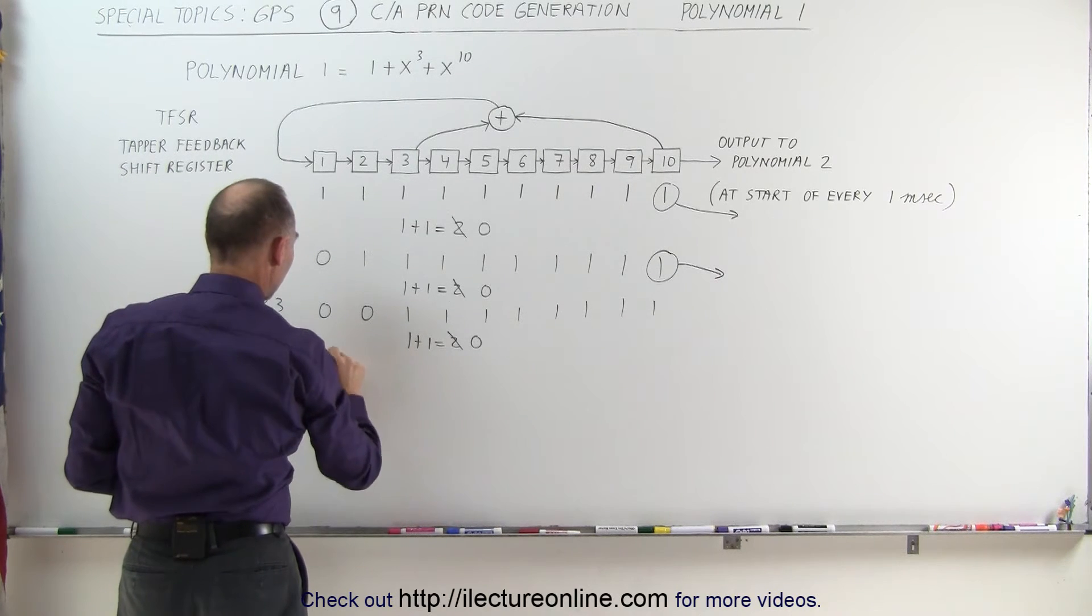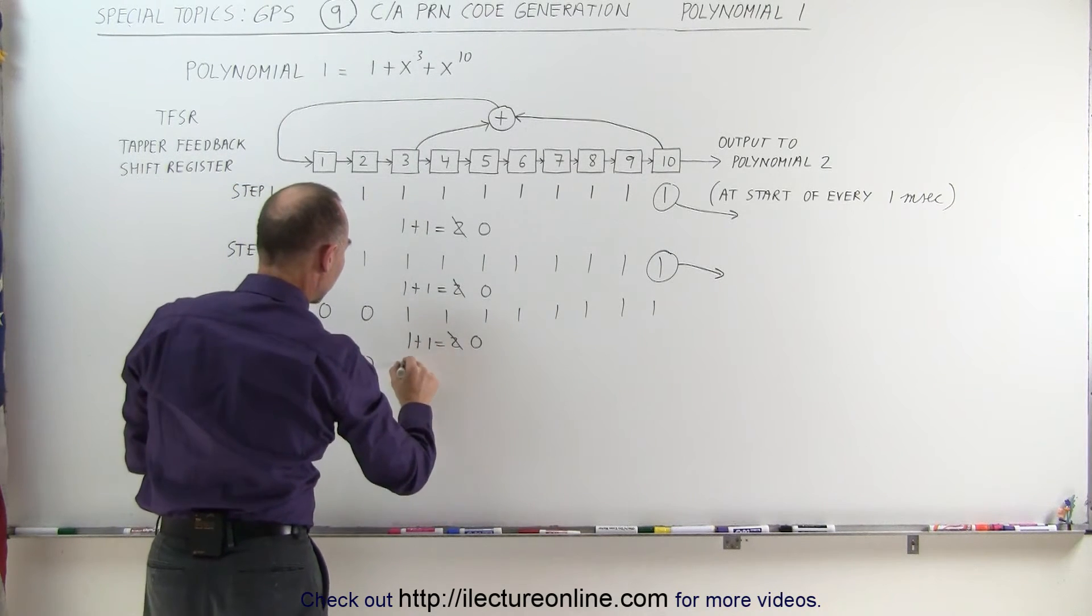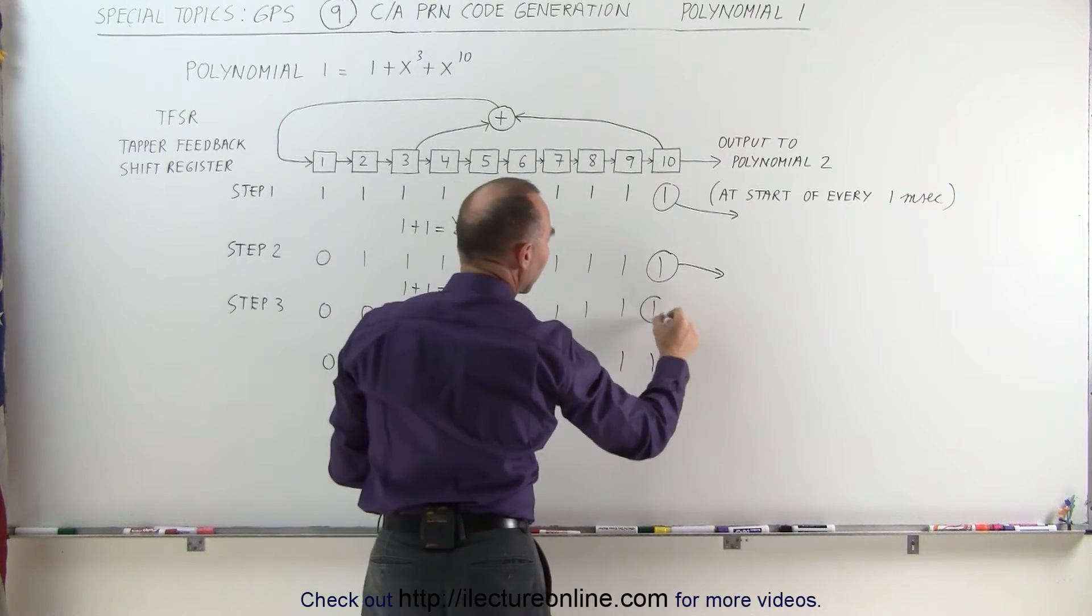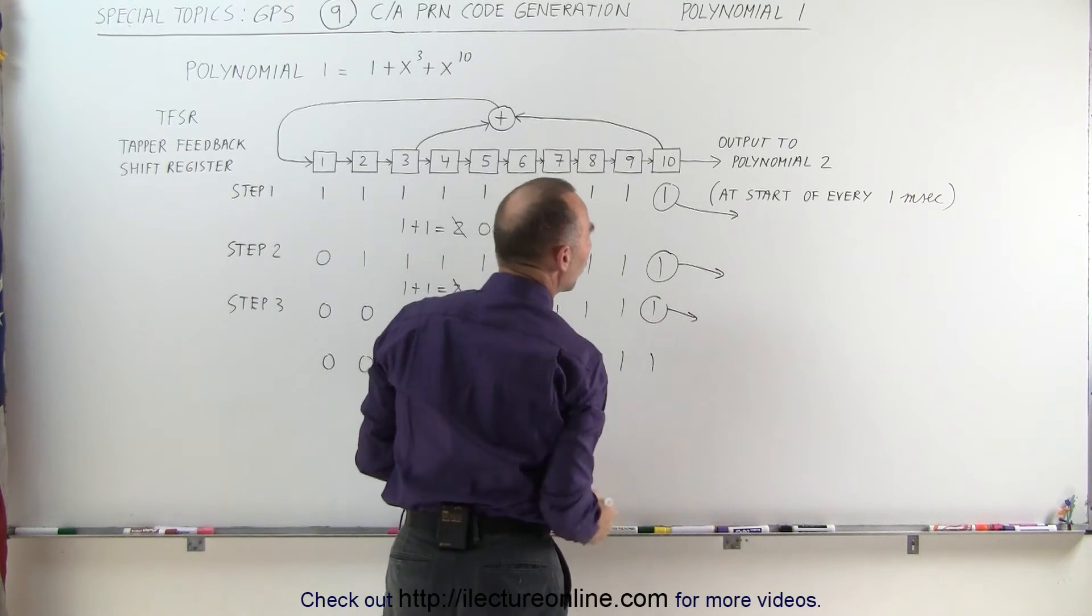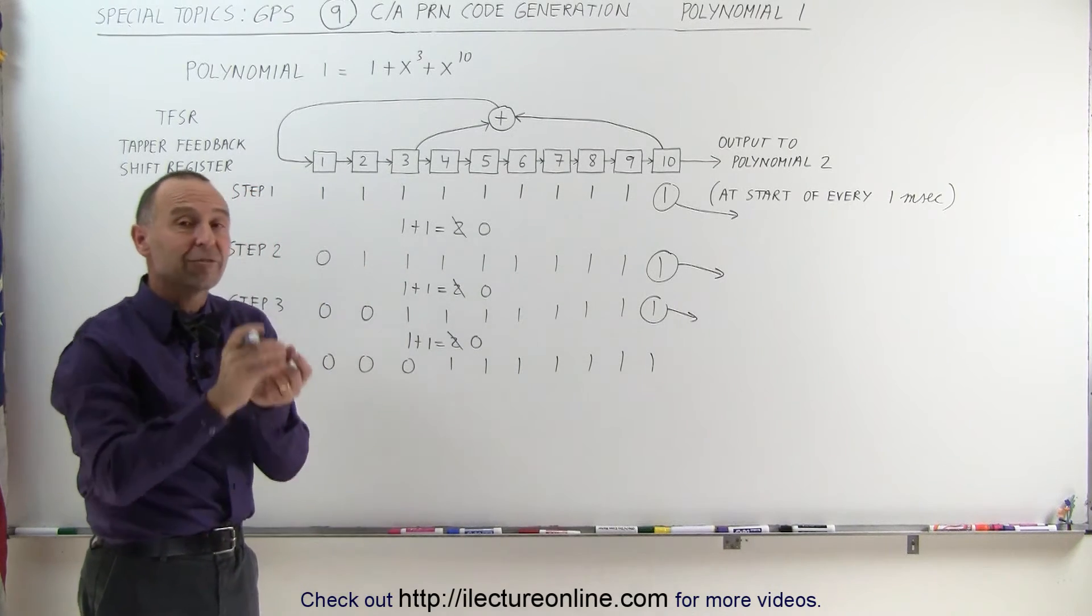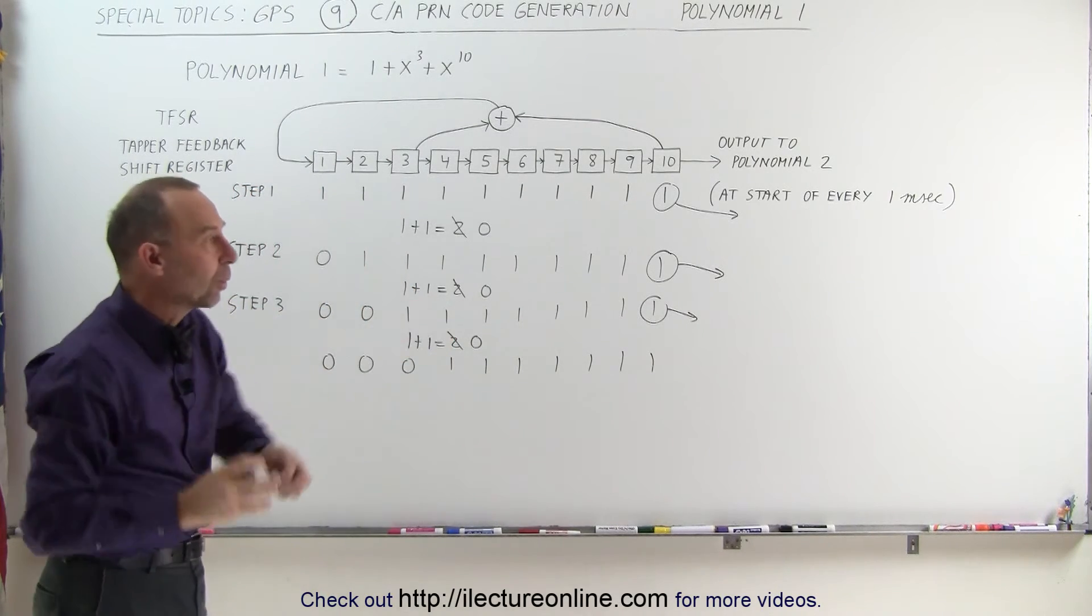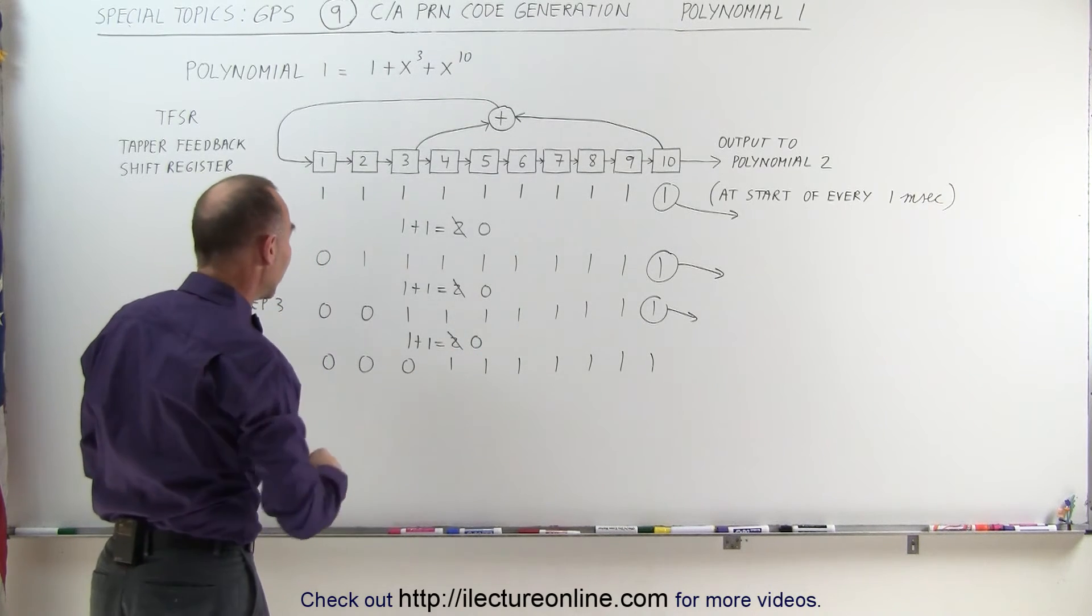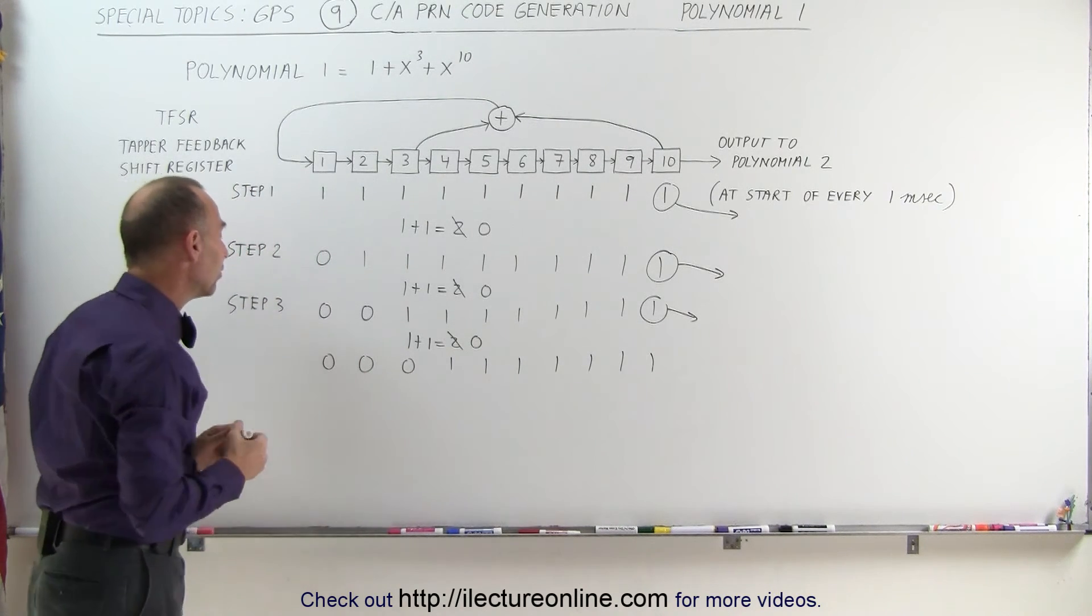So next, we'll get 0, 0, everything else shifts over 0, 1, 1, 1, 1, 1. And then at the same time, this gets shipped over to polynomial 2. So at this point, we would have 3 of the chips of the 1023 chipset that we're trying to put together in that 1 millisecond. Now you can see that something is different.